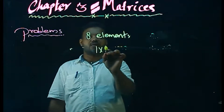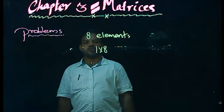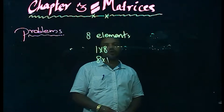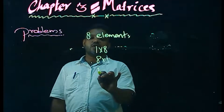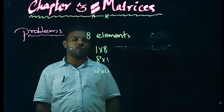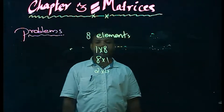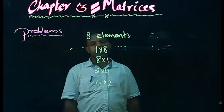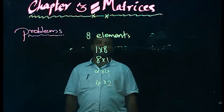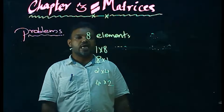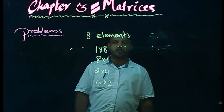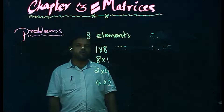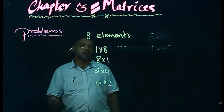1 by 8 is one possible order. 2 by 4 is another possible order. 4 by 2 is also another possibility. 8 by 1 is another. So the possible orders are 1 by 8, 8 by 1, 2 by 4, and 4 by 2.